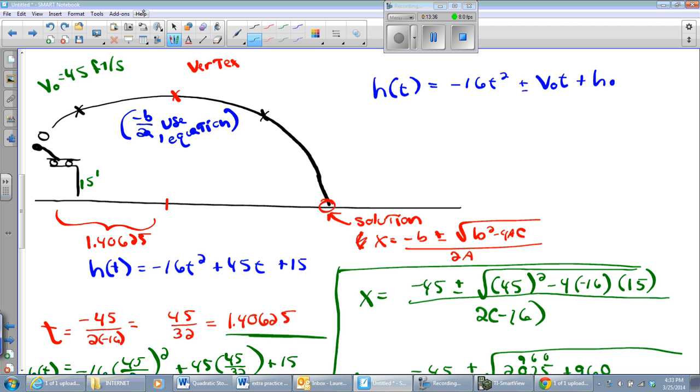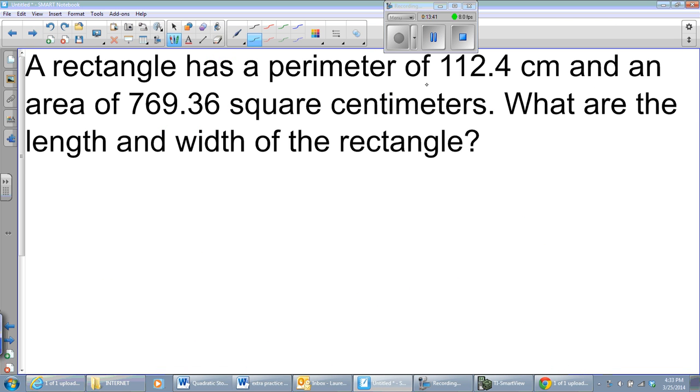If you're in second or eighth period, you can stop watching. You don't have to watch the next part. If you're in honors first period, go ahead and watch it. Alright. A rectangle has a perimeter. A perimeter. Oh, isn't that twice the length plus twice the width? And it equals 112.4. And an area. Area. Oh, that's length times width of 769.36. Sorry, my throat is getting very sore. I'm afraid I'm going to get sick on spring break.